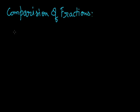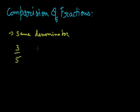If we are having fractions with the same denominator, it is very simple to compare the two fractions. For example, if I am having 3 by 5 and another rational number 7 by 5, you can see that the denominator of both the fractions are equal. So, we have to simply compare the numerators. Here you can see that 3 is less than 7, so 3 by 5 will be less than 7 by 5.